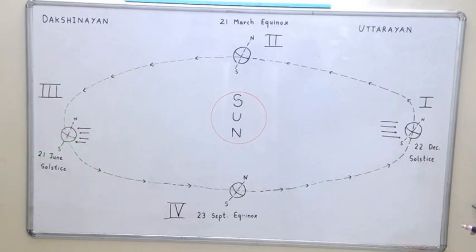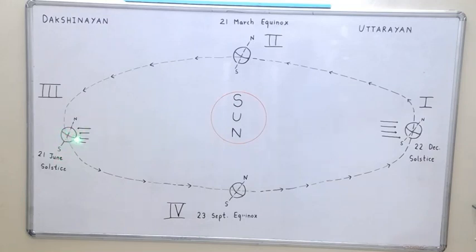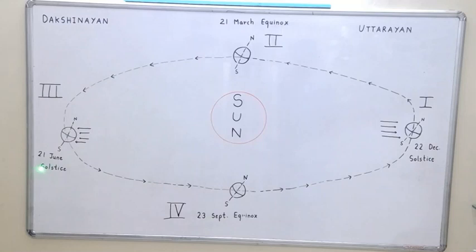After three months, the sun's rays fall on the northern hemisphere and cannot reach the south pole. Therefore, the northern hemisphere experiences summer and the southern hemisphere experiences winter. This occurs on 21st June and the day is called solstice.